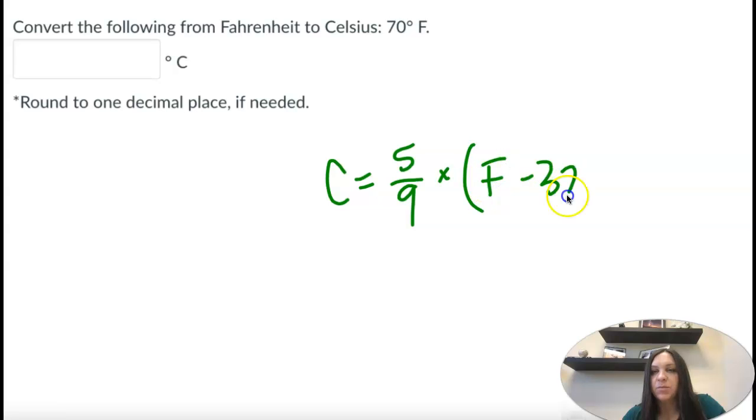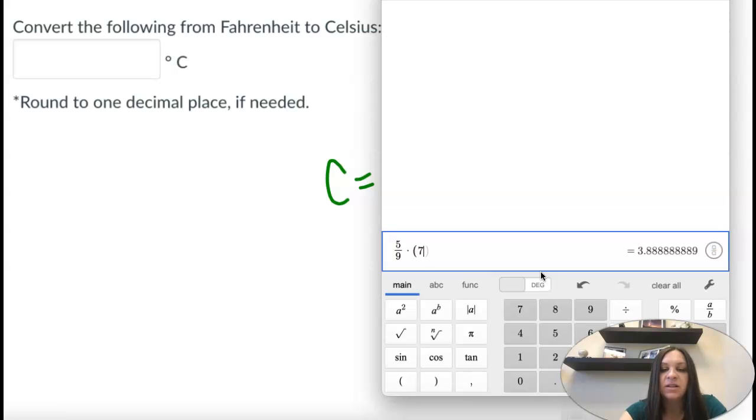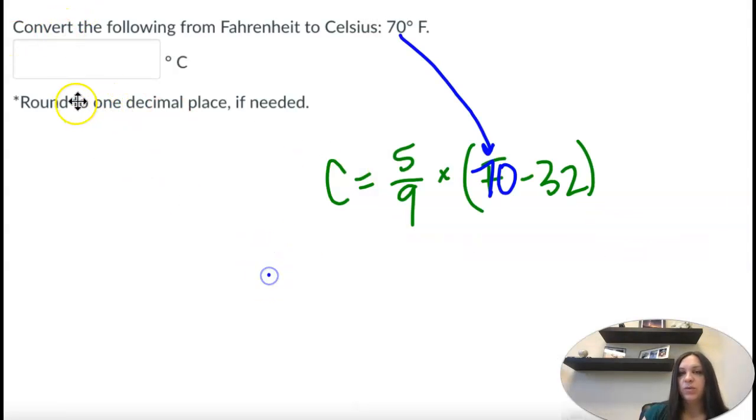So notice how that's in parentheses. That means that we need to include the parentheses and calculate that first. So Fahrenheit is 70, and we're just going to type that in our calculator. So 5 ninths times parentheses 70 minus 32, and we're rounding to one decimal place. So 21.1.